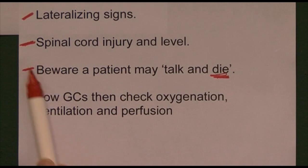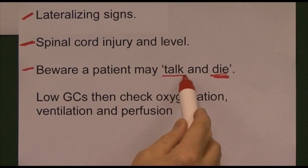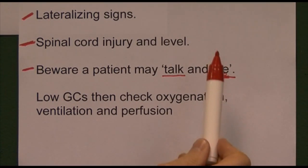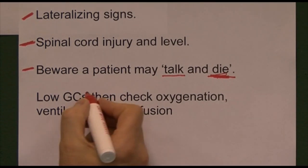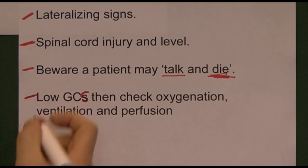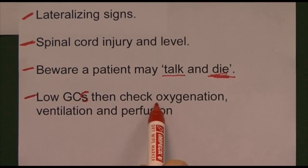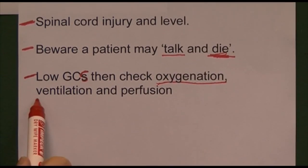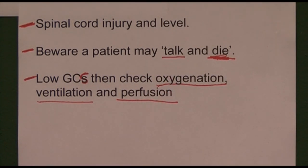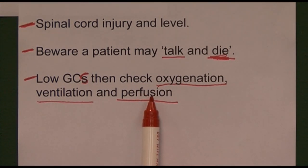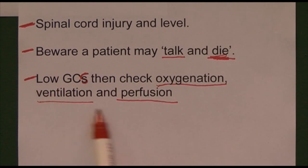This reinforces the point to continually reassess your patients — A, B, C, and D — as you go along. Some patients talk when they come into the department but may die as a complication of secondary brain injury. If the GCS is low, check the obvious things first: make sure the patient is being oxygenated, ventilated, and perfused. Very often low GCS is caused by poor brain oxygenation, poor lung ventilation, or poor brain perfusion — not by intracranial pathology itself. Always check and correct those basic things.